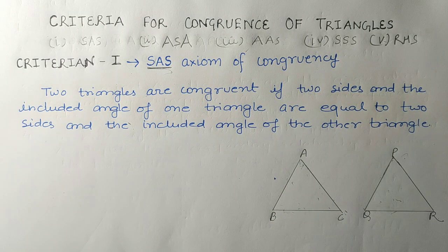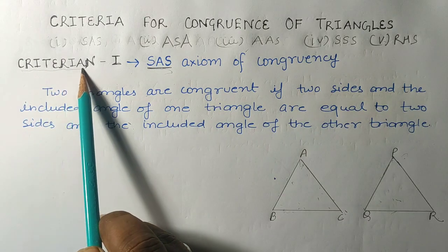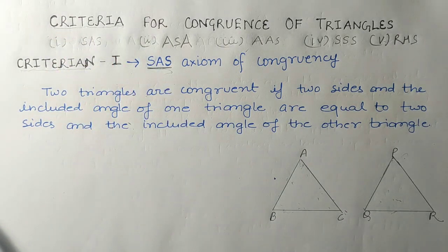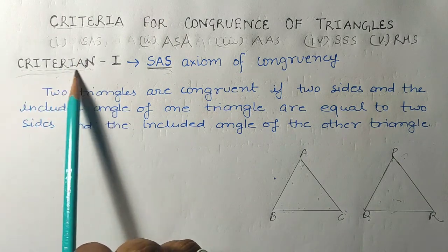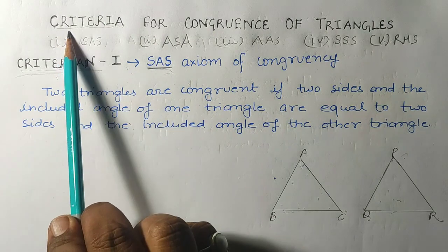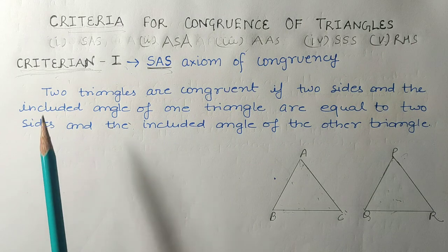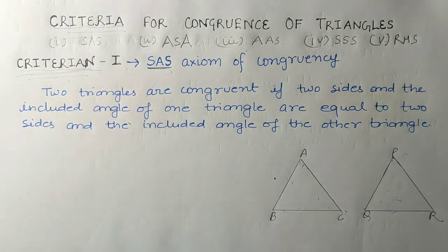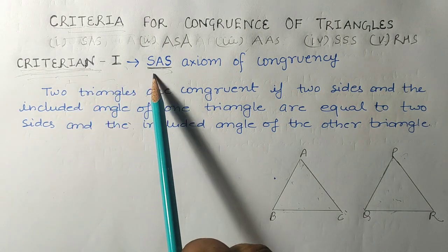Note: 'criterion' is a singular word and 'criteria' is a plural word — don't confuse the two. Just like 'radius' is singular and 'radii' is plural, 'criterion' is singular and 'criteria' is plural. Our first criterion is Side-Angle-Side.